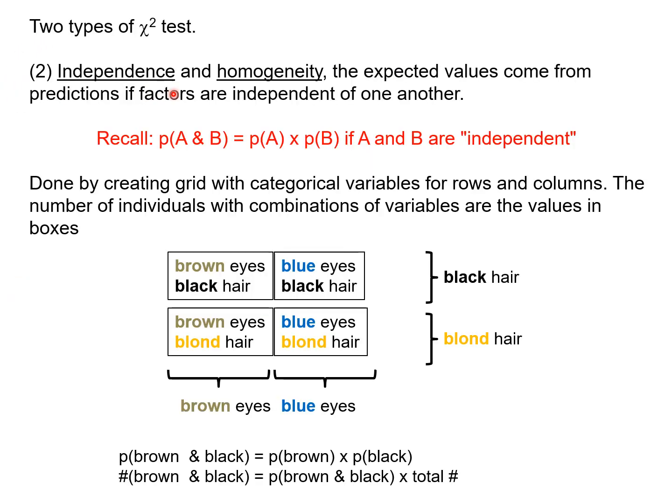So our second test, independence and homogeneity, the expected values are going to come from predictions if the factors are independent of one another. And as you'll recall, the probability of A and B was the probability of A multiplied by the probability of B if A and B were independent.